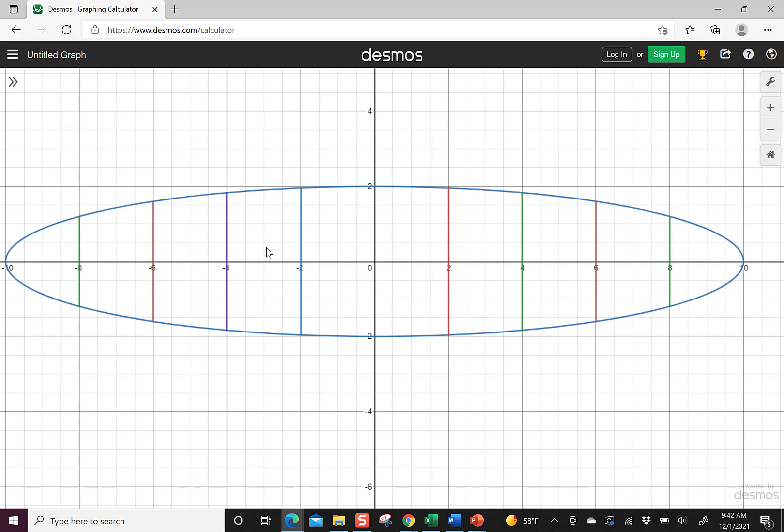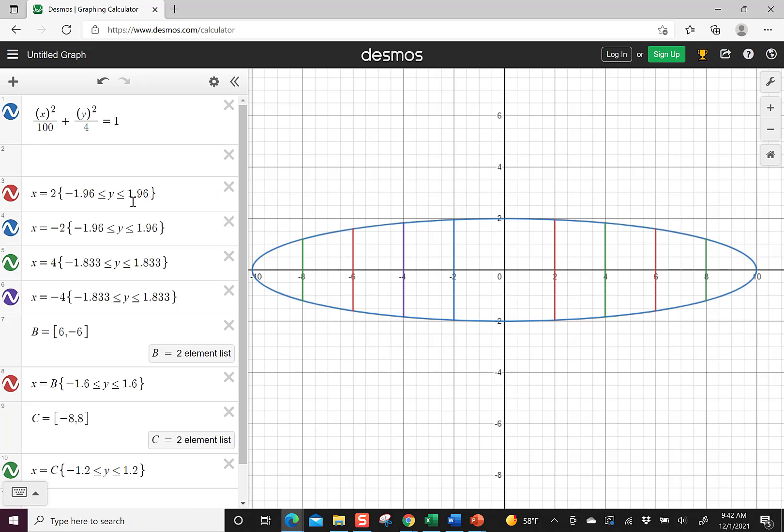If you have the question that says, what is the width, like at 2, at 4, at 6, at 8, remember to multiply by 2. So when you go back and you look at 2 said 1.96, you would want to multiply that by 2 to say that the overall width of the graph at 2 is 3.92.